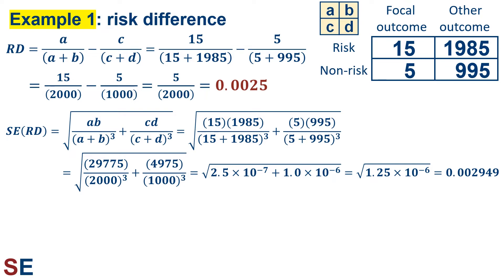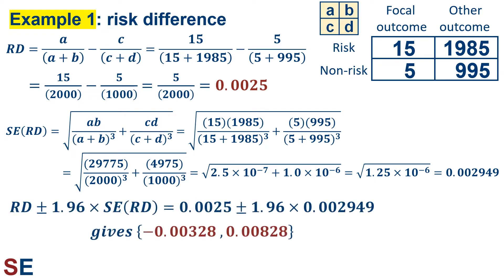Adding and subtracting 1.96 standard errors gives us 0.0025 plus or minus 1.96 times 0.002949, to get an interval of negative 0.00328 to positive 0.00828 for the confidence interval of the risk difference. Our 95% confidence interval includes 0, which means the population risk difference could easily be 0. We therefore lack good evidence to conclude that the sample risk difference is significantly different from 0.